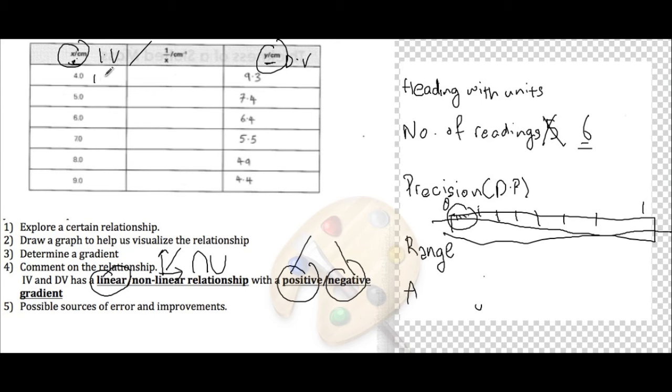A good range for you to use if your independent variable instrument is a meter ruler will be to use perhaps 15 cm, then 30, then 45, then 60, 75, followed by 90. So then that enables you to use a majority of the ruler here. So that is a good range.